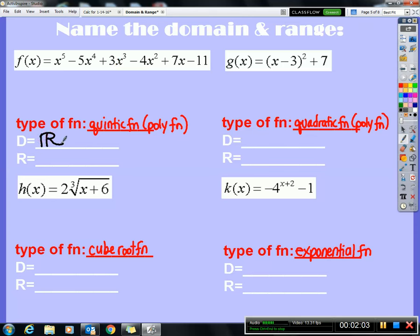I'm going to do domains first and go back and do ranges. The same thing is true for g of x. Any x value I want to, I could take it, subtract three, get that answer, and then square it and then add seven. There's nothing that I need to be careful about.